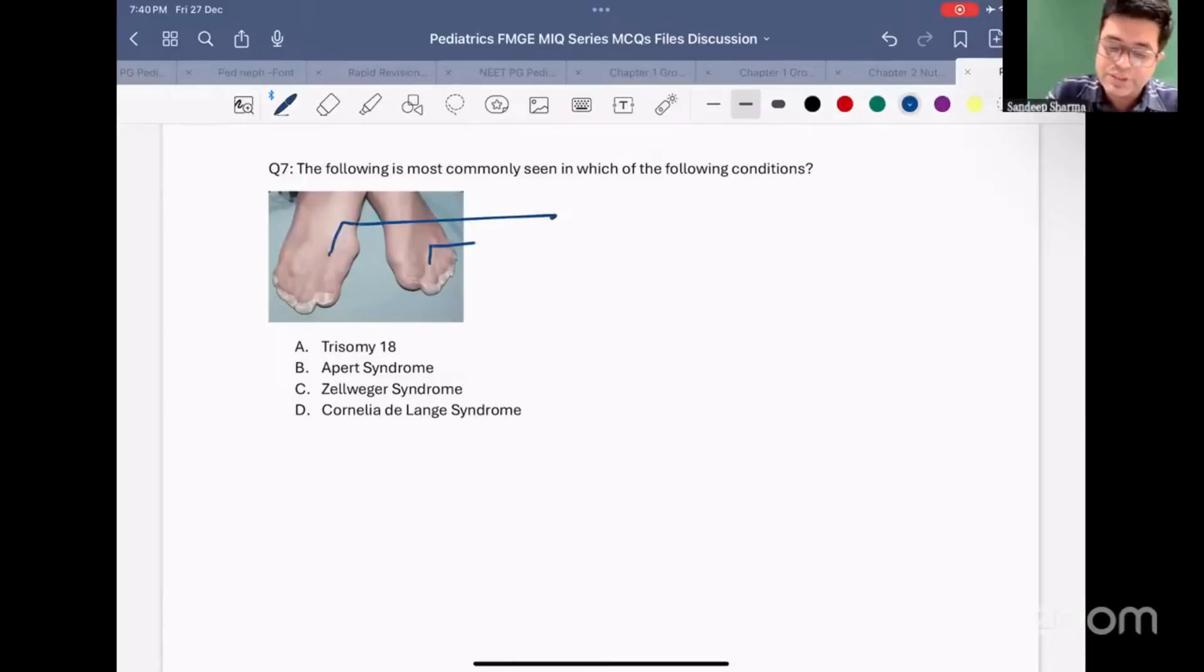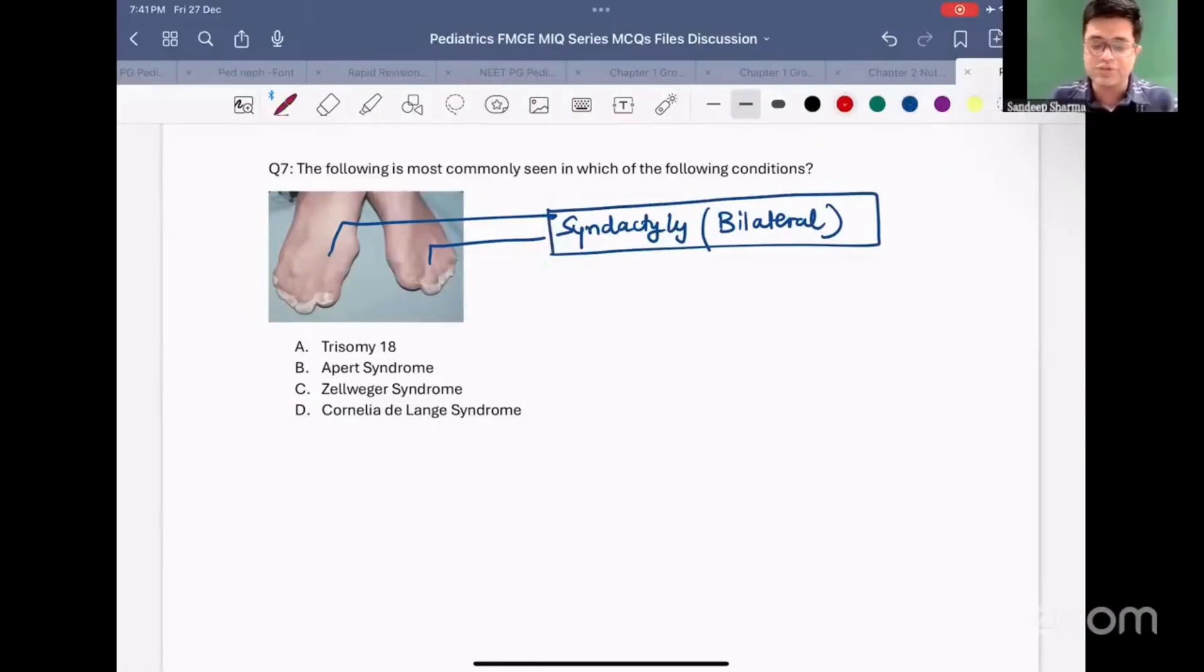This is a patient who is having syndactyly, fusion of the digits. This syndactyly is called as bilateral syndactyly. Now, the question arises, which of the following conditions is associated with bilateral syndactyly?